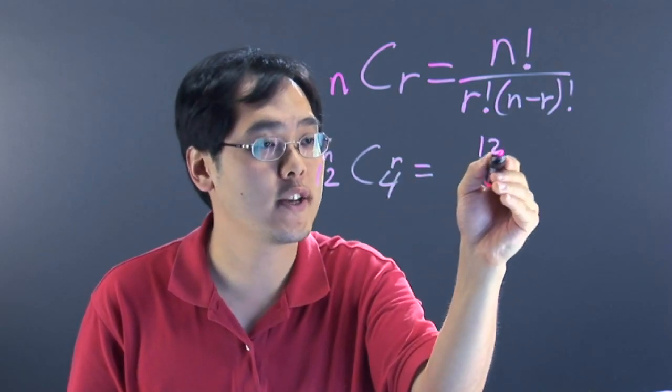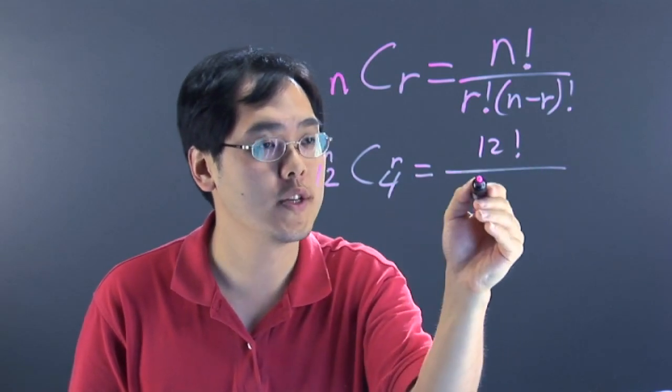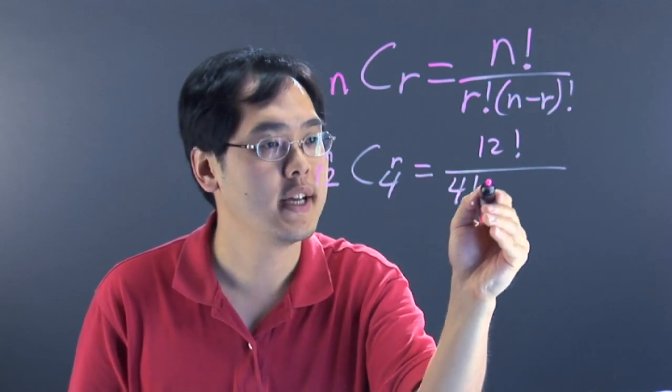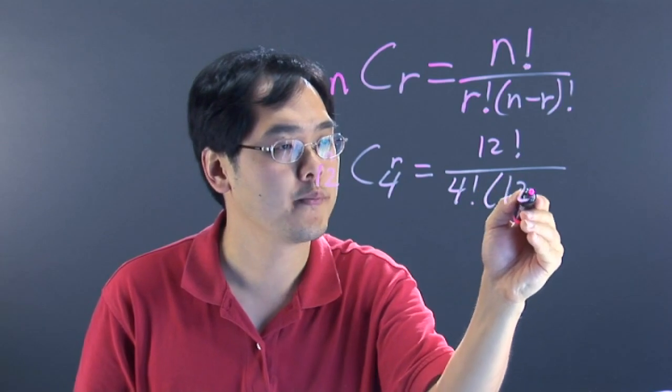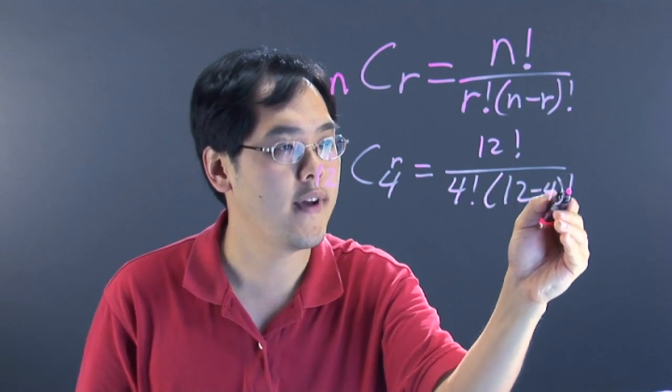So you have 12 factorial over R is 4, 4 factorial times 12 minus 4 factorial like so.